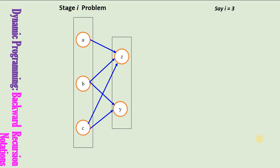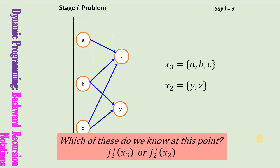Let us say i equals 3. What are the possible values of x3 and x2? Since this is backward recursion, x3 will contain a, b, c and x2 will contain y and z. Now, which do we know in the stage i problem — f3 star or f2 star? At this stage we know f2 star and we are interested in finding f3 star.